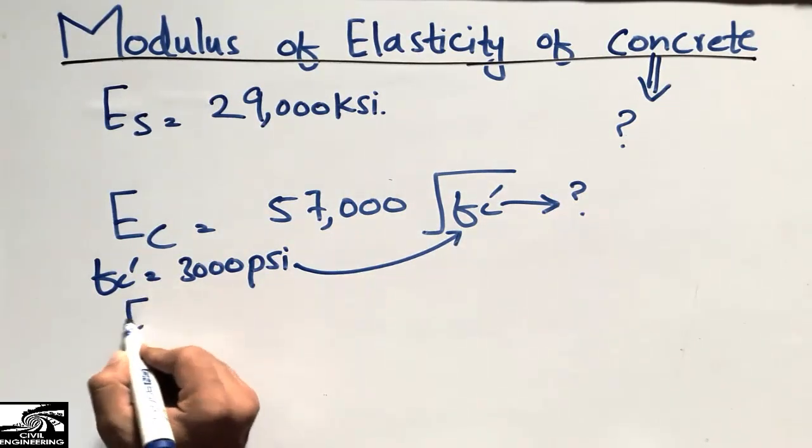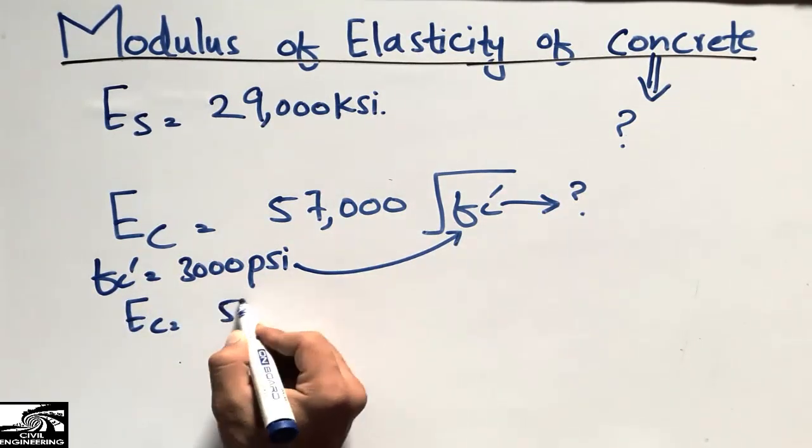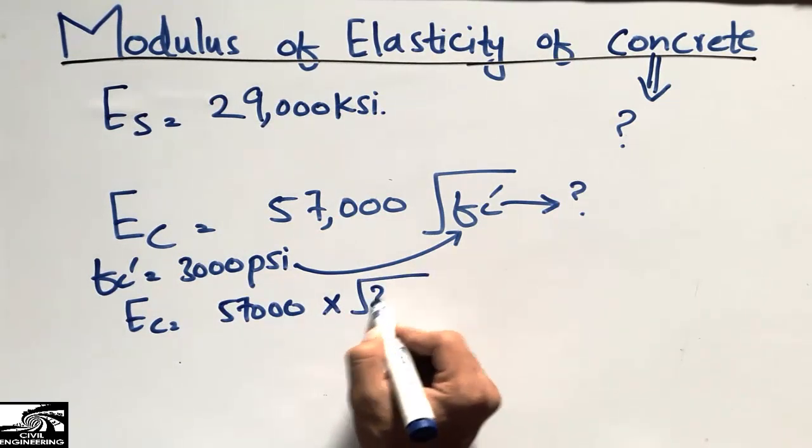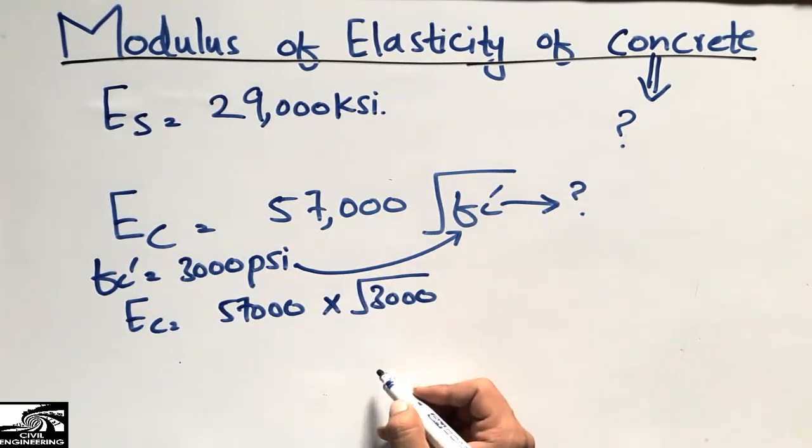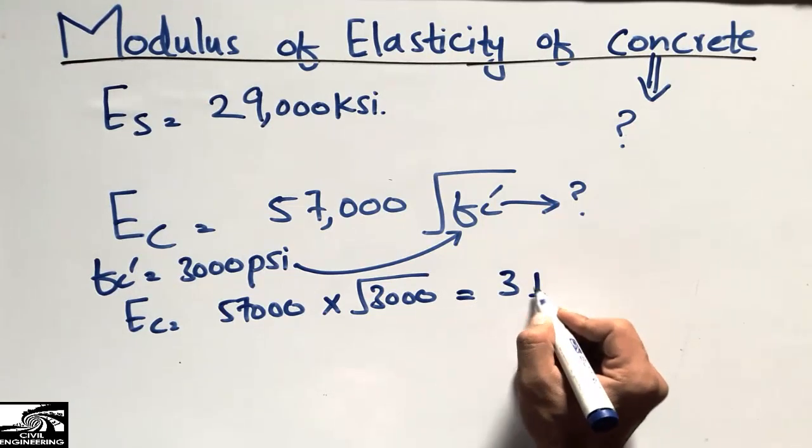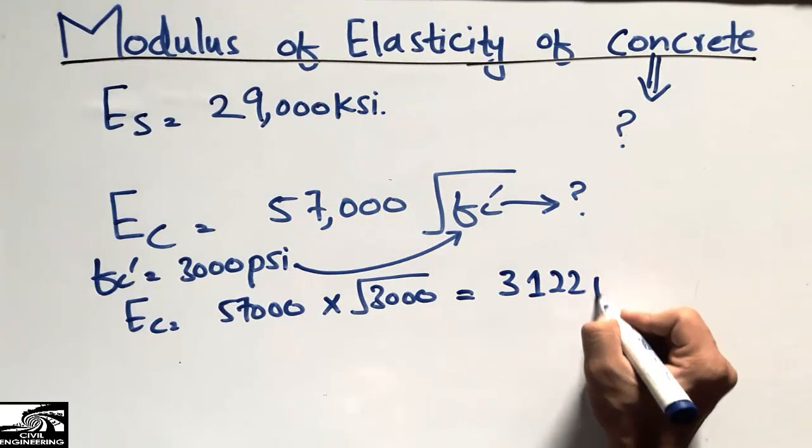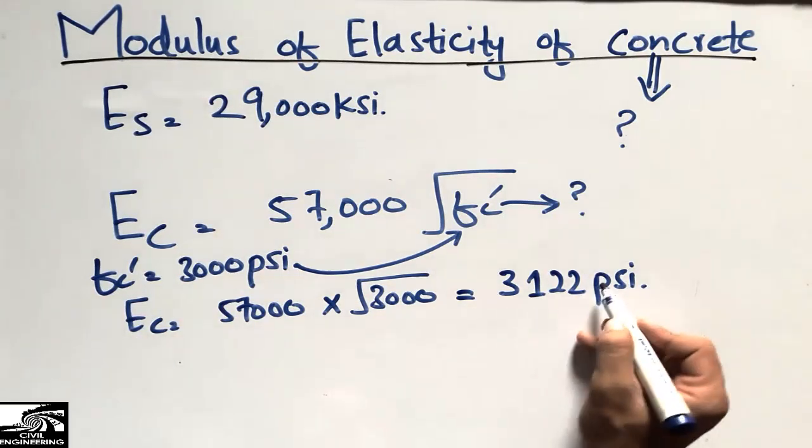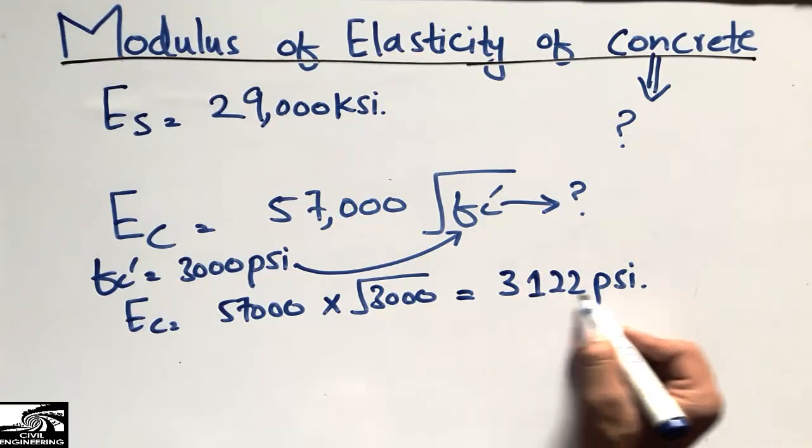Putting this value into this equation, we get the elasticity of concrete as 57,000 times the square root of 3,000 psi. So what we get is 3,122 psi. This is the elasticity of concrete for grade 3,000 psi.